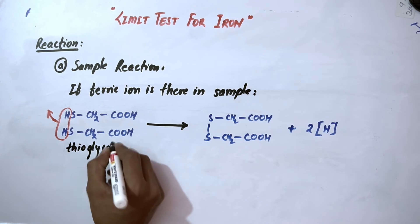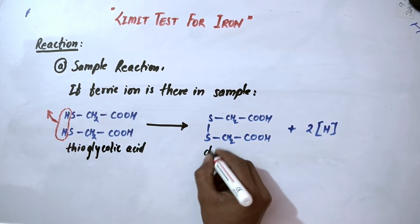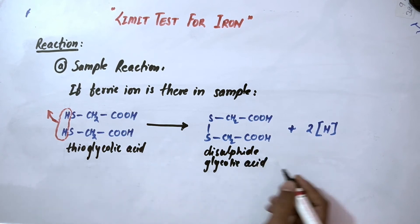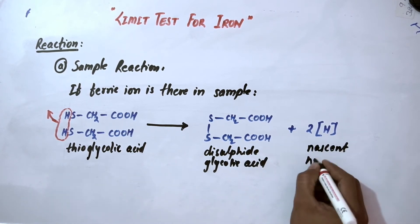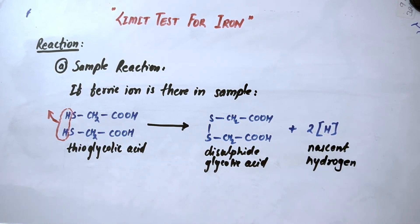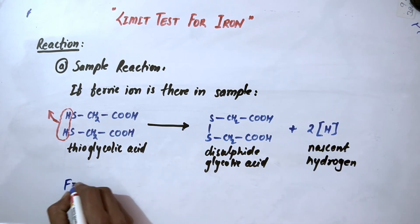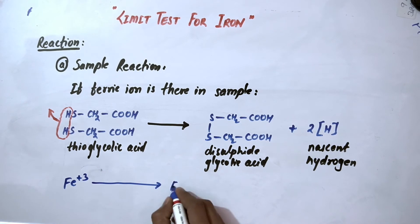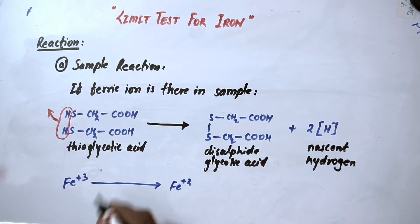Now we will write the name: thioglycolic acid, this is disulfide glycolic acid, and this is nascent hydrogen. These nascent hydrogens are highly reactive and if there is any ferric form of iron, it will be reduced into ferrous form in presence of this nascent hydrogen.